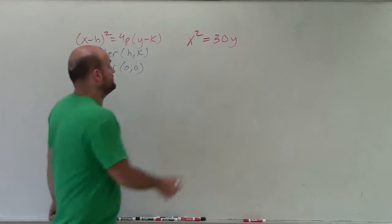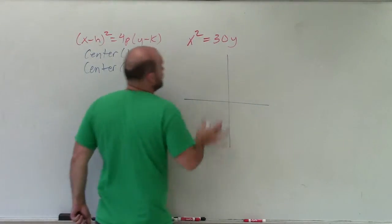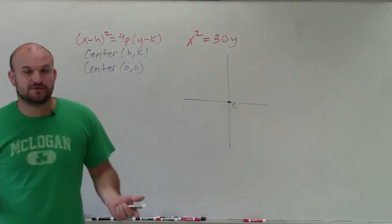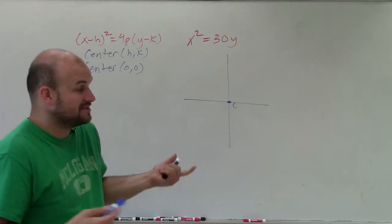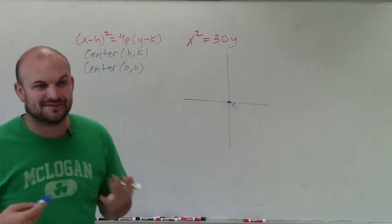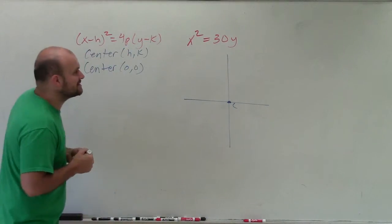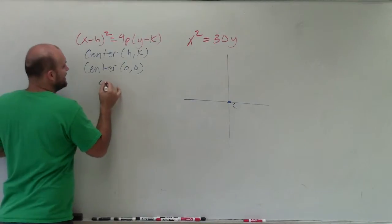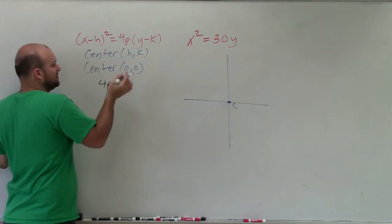The last thing we need to do to graph this: we know x is squared, so the graph is going to open up or open down. We just need to determine which one. You could look at the coefficient and say a is positive, going back to quadratics, but the way we like to do it with conic sections is to determine the value of p, because p represents the distance from the vertex to the focus.